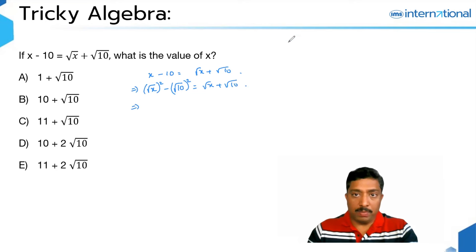So if you remember, A square minus B square is nothing but A minus B into A plus B. Going by this concept, you split this, root X whole square minus root 10 whole square as root X minus root 10 times root X plus root 10.